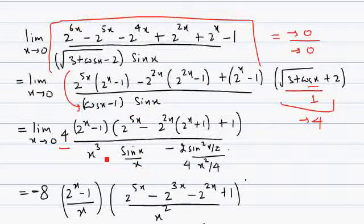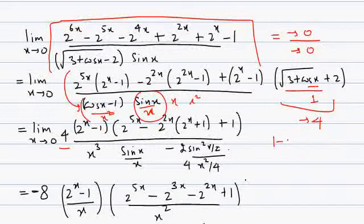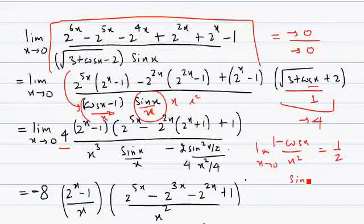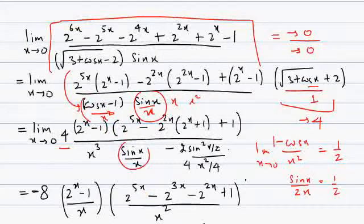For the trigonometric part, we divide by x and multiply by x so that the limiting value of sin(x)/x is 1. For the cos x minus 1 term, we divide by x² and multiply by x², using the known result that the limiting value of (1 - cos x)/x² is 1/2 — either by formula or by L'Hôpital's rule, where the derivative of the numerator is sin x and the denominator is 2x, giving sin(x)/x → 1, so the limit is 1/2. This simplifies the denominator, giving a factor of minus 1/2, and combining gives minus 8 outside.